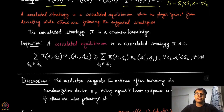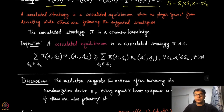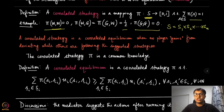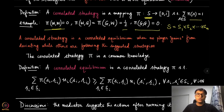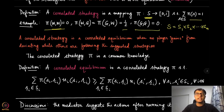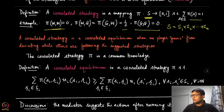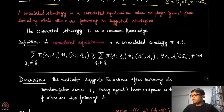A correlated strategy is a correlated equilibrium when it is self-enforceable — meaning no player gains from deviating while others follow the suggested strategy. We also assume this correlated strategy is common knowledge, like a traffic light known to be green half the time in each direction.